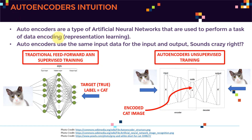Autoencoders are a type of artificial neural networks that are mainly used to perform a task of data encoding, or what we call representation learning. The concept might be a little bit strange at first, but it actually works like magic. The overall idea of autoencoders is that we're going to feed the exact same input data as both the input and the output.